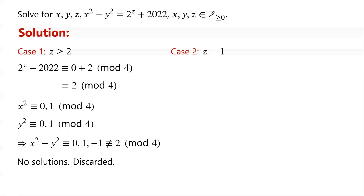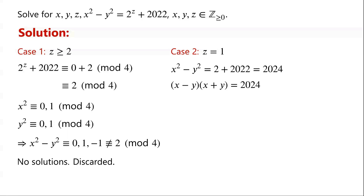Case 2: z equals 1. Then the equation becomes x squared minus y squared equals 2 plus 2022, which is 2024. We write x squared minus y squared as x minus y times x plus y. 2024 can be written as 2 cubed times 11 times 23. So x minus y and x plus y must be factors of 2024.